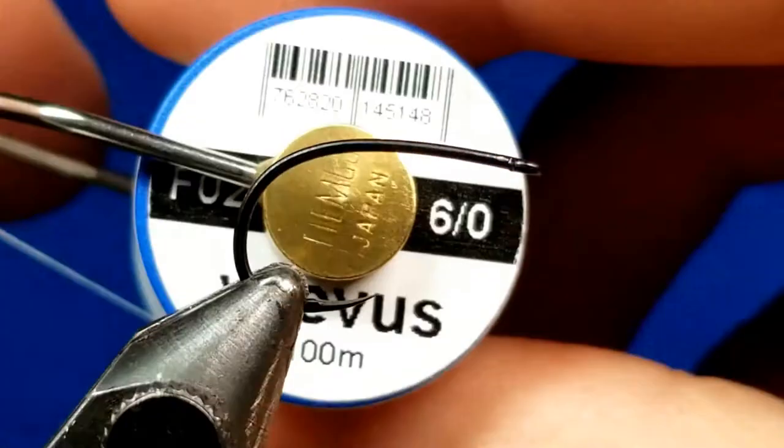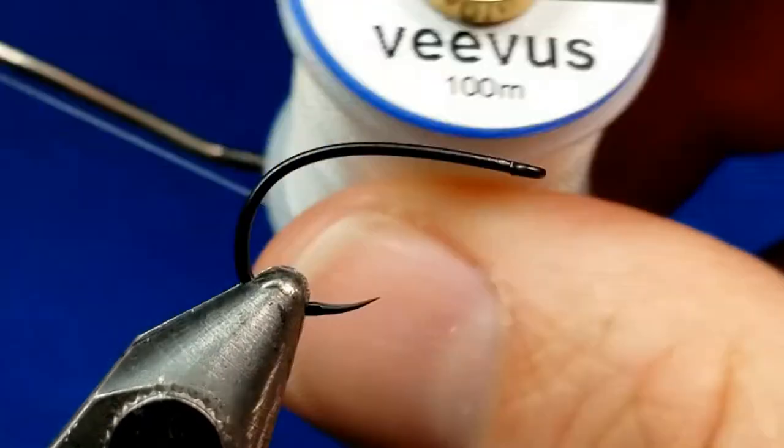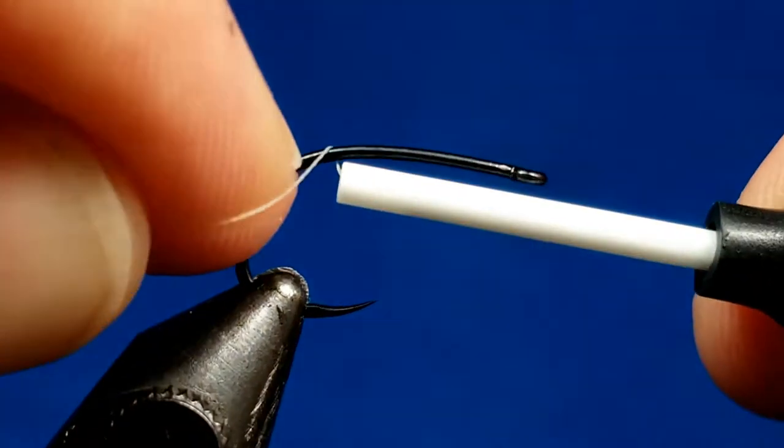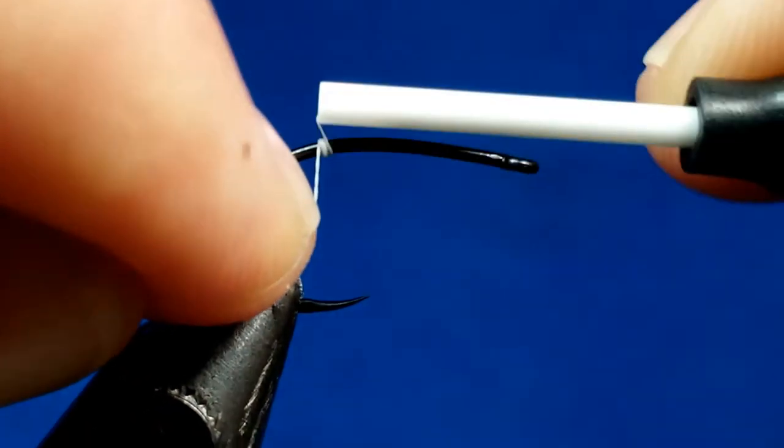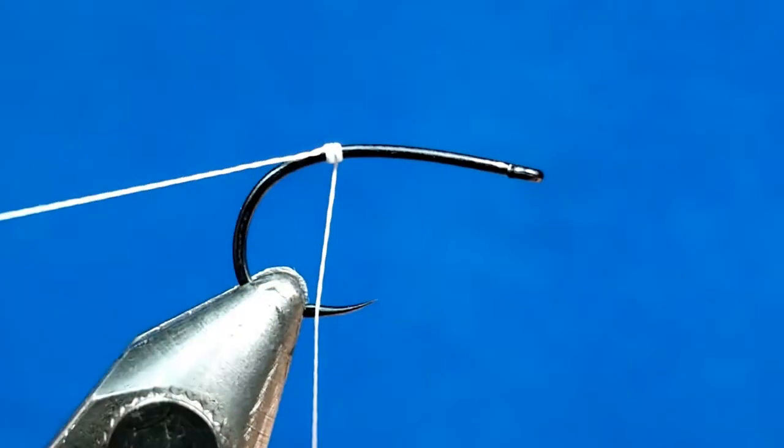We're going to bring in three different types of thread for this visual example. We're going to start with a 6-0 and I'm going to take six wraps here and just let that hang.